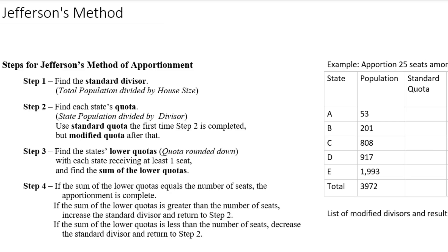So the standard divisor is calculated by taking the total population, 3,972, and dividing it by the house size, which means the number of seats. And if you divide those, you're going to get 158.88.